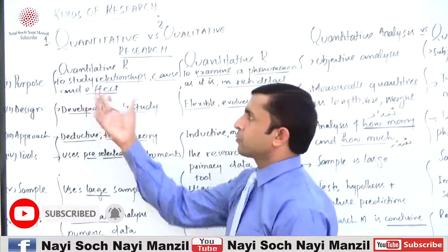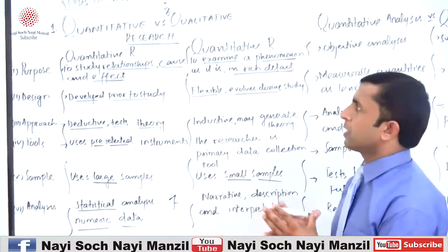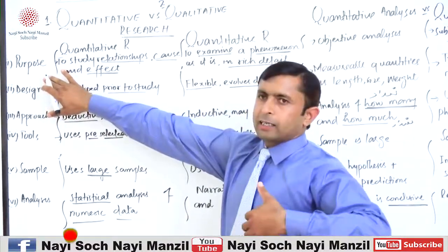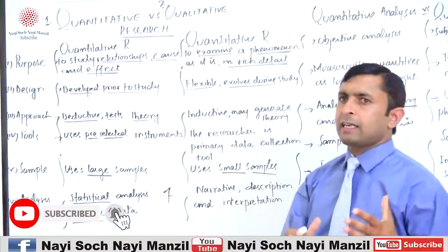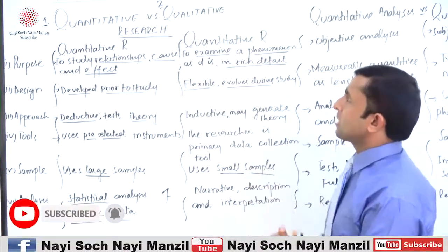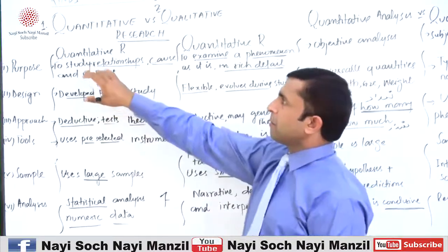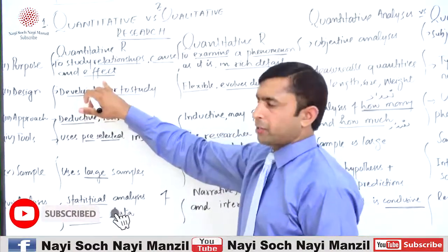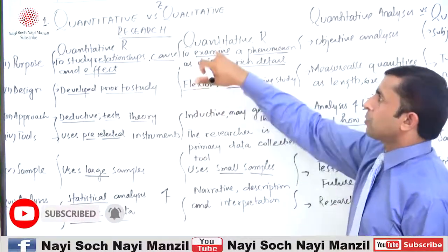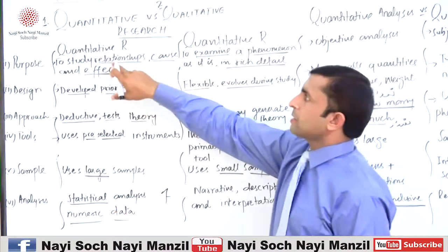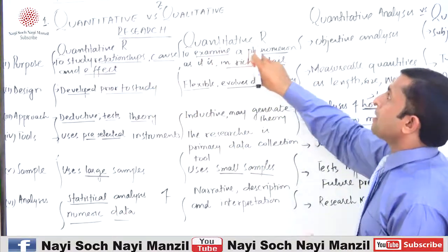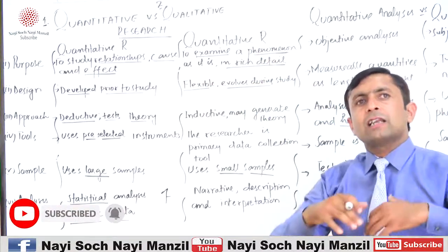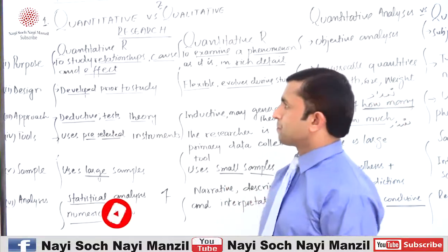The first head under which we will discuss the difference between quantitative and qualitative research is the purpose. Quantitative research is done to study relationships, cause and effect. If we talk about qualitative research, it studies the relationships and examines a phenomenon as it is, studying it in its rich details.